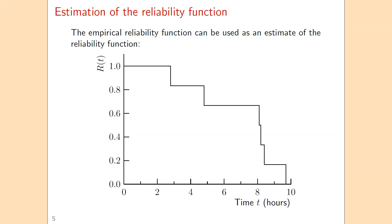If we have a dataset consisting only of failures, the empirical reliability function can be used as an estimate of the reliability function. In our dataset the shortest time until failure was 2.8 hours, so we make a step downward at time 2.8 of size 1/6, because we have 6 durations in our dataset. We do the same at each subsequent failure time, until we reach value 0 at the end.